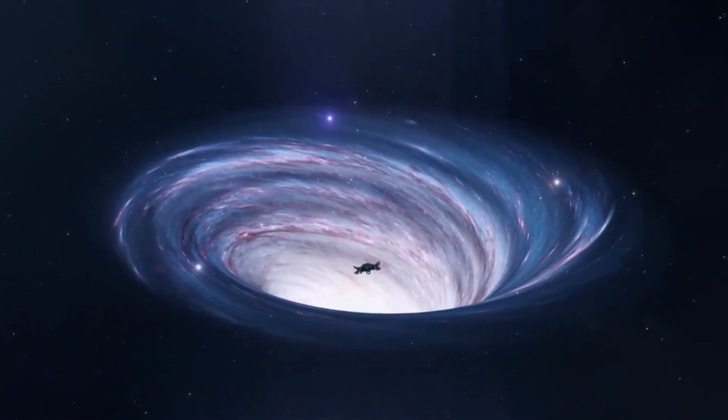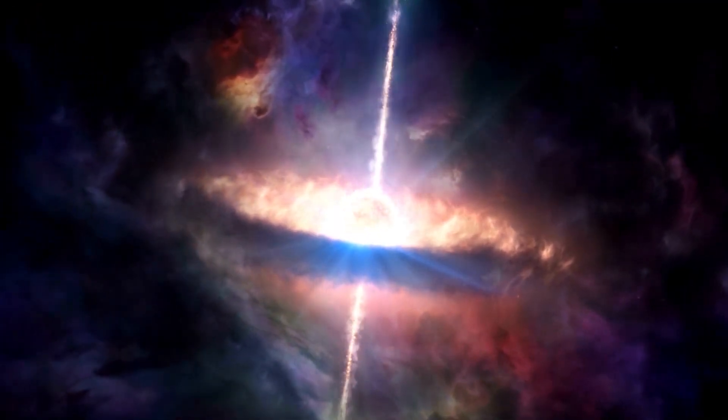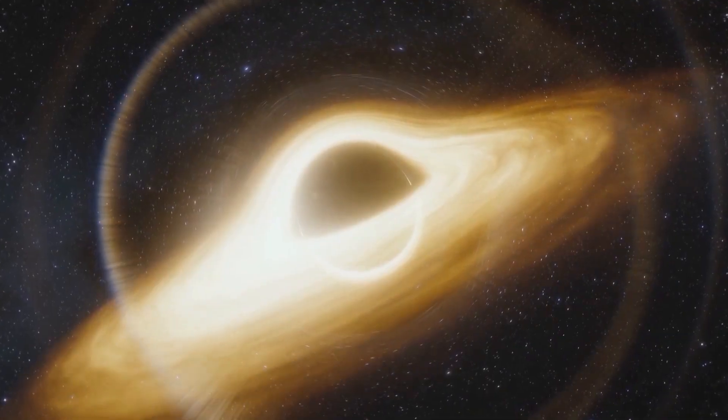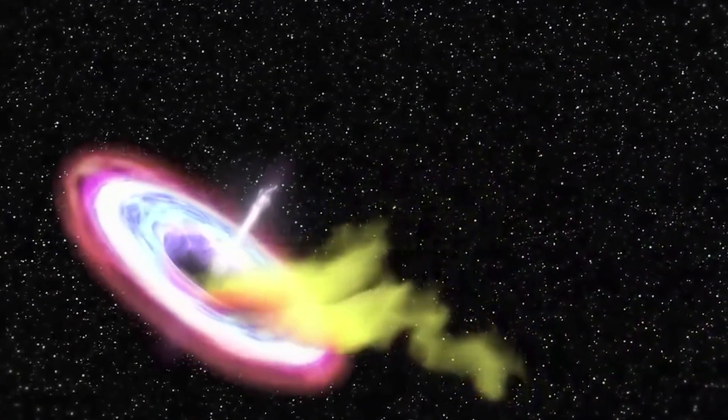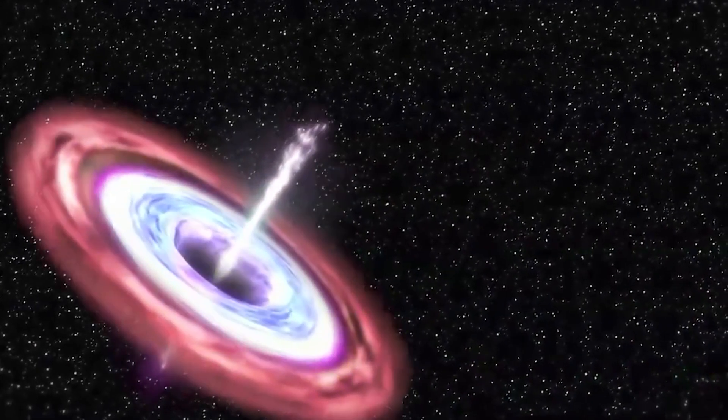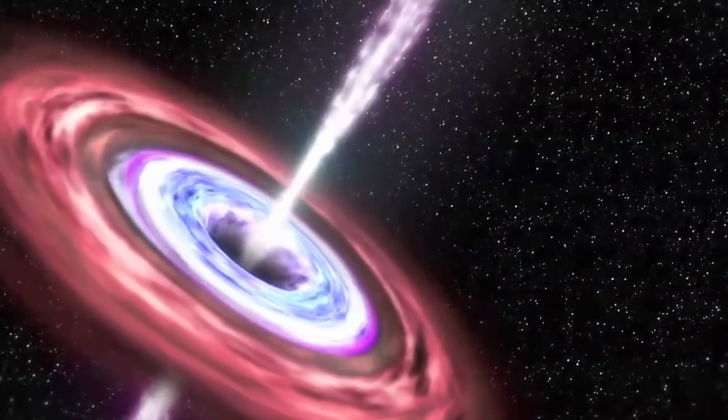Scientists can then further study the accretion disks, the circular structures of dust and gas spiraling into black holes. Observing the infrared signatures of these disks can help scientists explore black holes' energy output and feeding mechanisms. Scientists can study gravitational waves, the behavior of black holes, and their role in the universe at large.